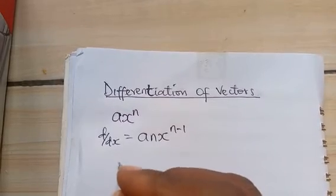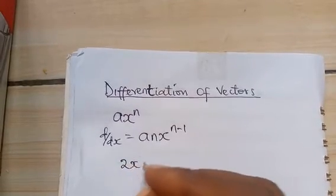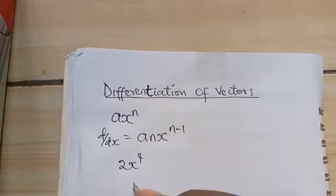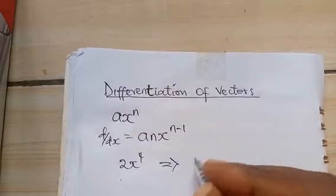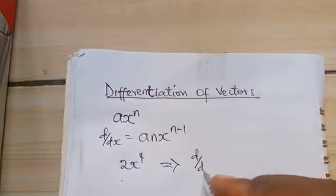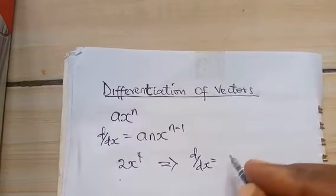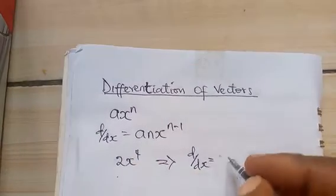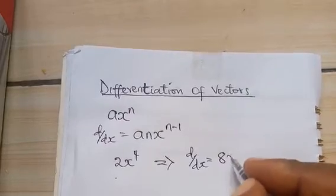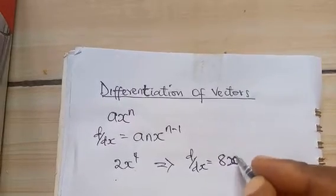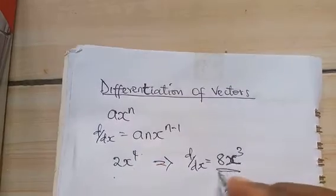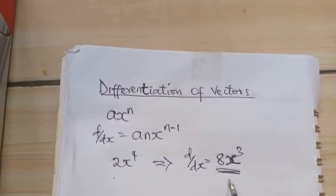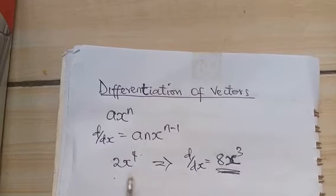For example if I have 2x raised to power 4 and I'm to differentiate it, differentiating this with respect to x will be 4 times 2 which will give us 8x^3. 4 minus 1 is 3. We have differentiated this. That is the summary of differentiation.